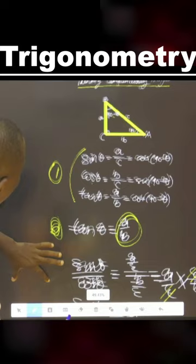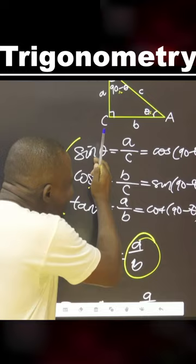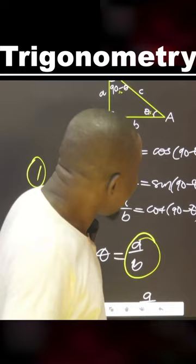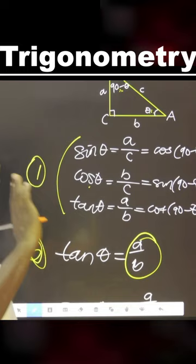Also remember: anywhere you see sine, for cosine it's 90 minus theta. Anywhere you see cosine, for sine it's 90 minus theta. Anywhere you see tan, for cot it's 90 minus theta. For example, cos 90 — the complementary would be tan 90 minus theta. These are complementary angles.